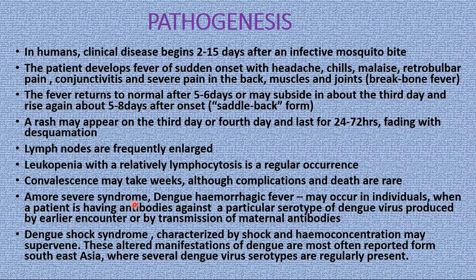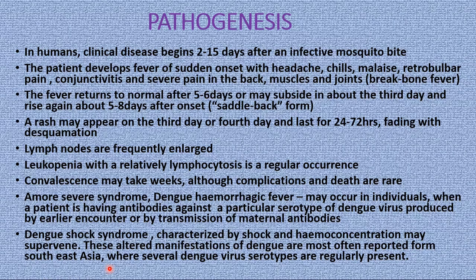A more serious syndrome — dengue hemorrhagic fever — may occur in individuals who have antibodies against a particular serotype of dengue virus produced by an earlier encounter, or by transmission of maternal antibodies from mother to baby. Dengue shock syndrome, characterized by shock and hemoconcentration, may also supervene. These altered manifestations of dengue are most often reported from Southeast Asia, where several dengue virus serotypes are regularly present.